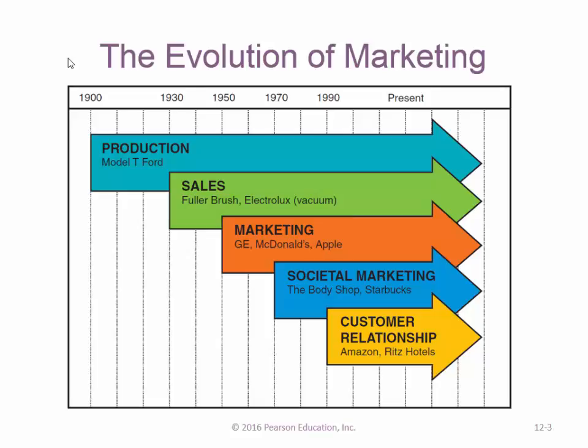Then marketing got more involved and we started advertising our products more heavily in the 1950s. By then, World War II was over and you had pent-up demand and more of a buyer's market, so we had to diversify more to provide different products and actually market them. Societal marketing emerged as companies began thinking about environmental factors. Finally, the customer relationship era came, where we really try to maintain an ongoing relationship with the customer — companies like Amazon and Ritz Hotels are examples of this.